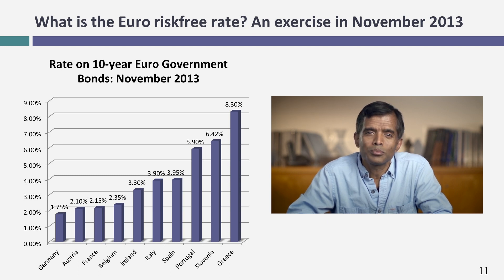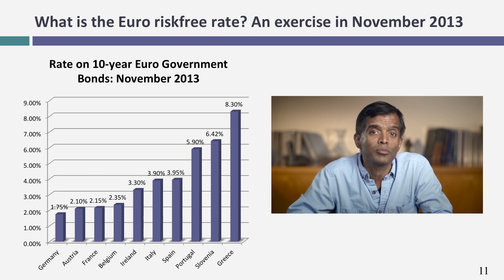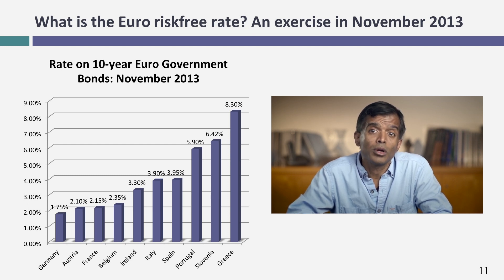Which of these rates should I use as my risk-free rate? The answer is surprisingly simple. These are all 10-year euro bond rates — not drachmas, French francs, or Deutsche Marks like 15 to 20 years ago. Because they're all in euros, there's only one reason rates differ: the market sees different levels of default risk across countries. It sees more default risk in Greece, Spain, and Portugal than in Germany. So if you want a risk-free rate in euros, you should use the 10-year German bond rate of 1.75%, as it's closest to being default-free.